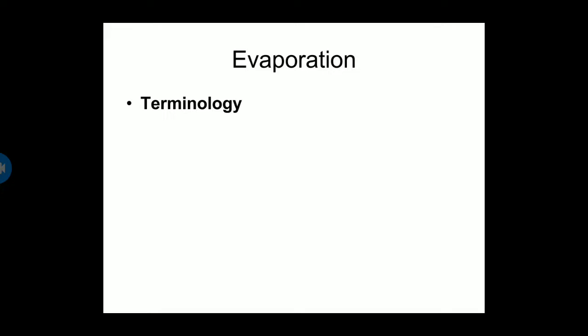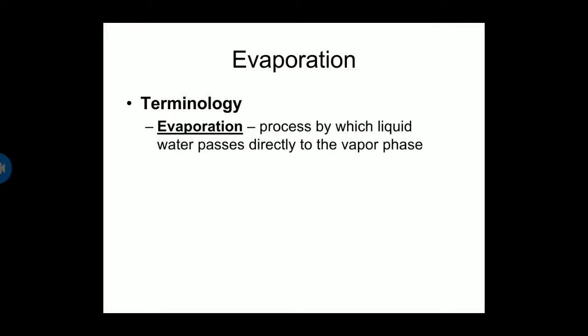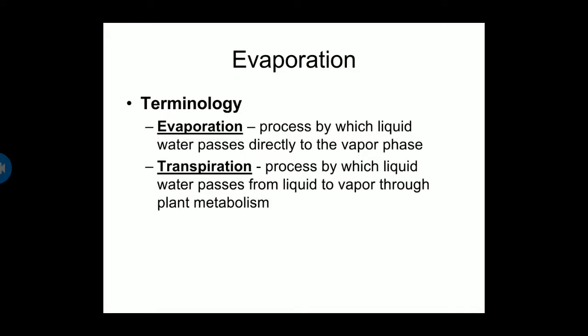First of all, let's see what is evaporation and the terminology behind the evaporation process. Evaporation is the process by which liquid water passes directly to the vapor phase. Transpiration is the process by which liquid water passes from liquid to vapor through plant metabolism.